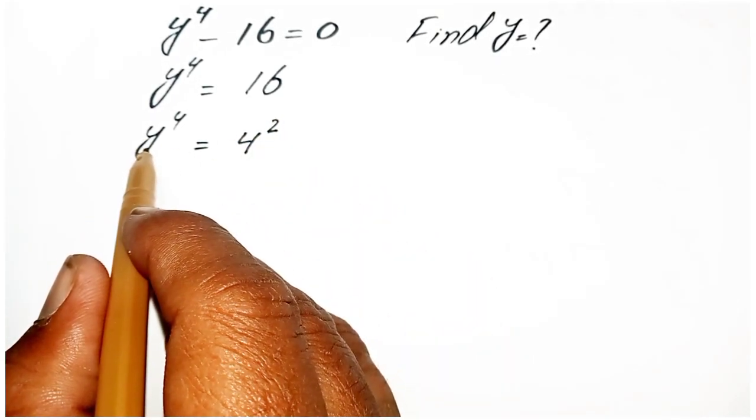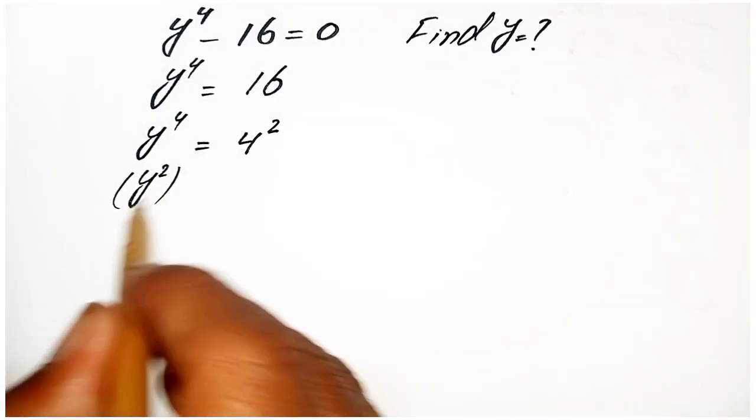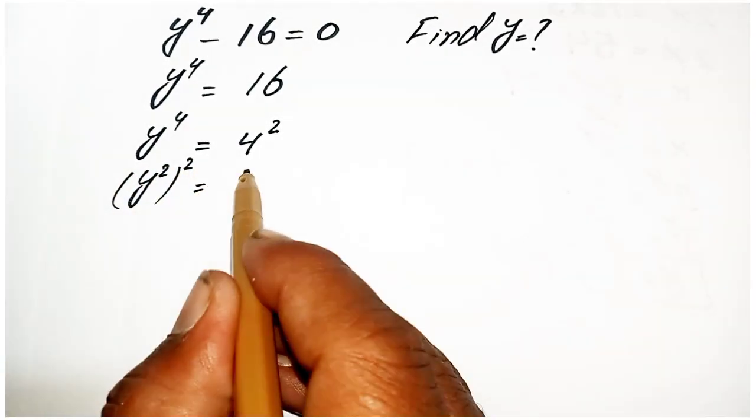Now we can write y power 4 as y square in brackets power 2, which equals 4 power 2.